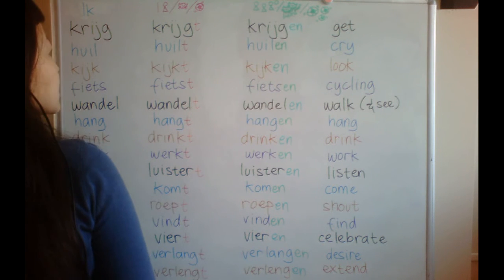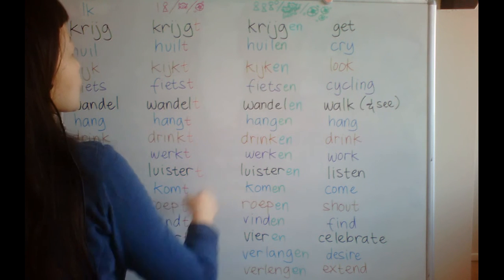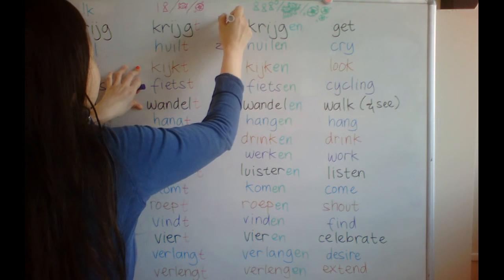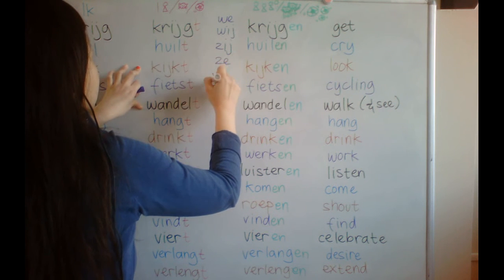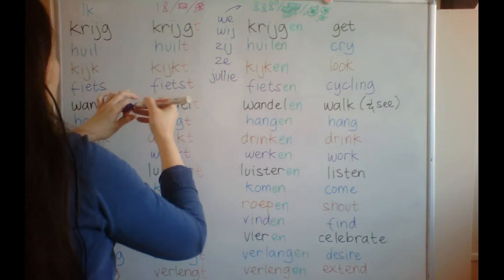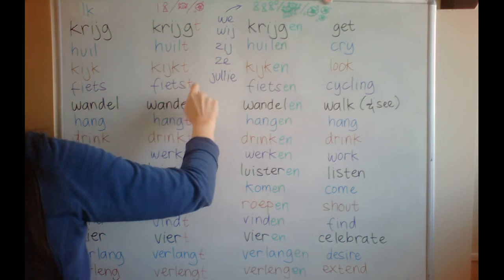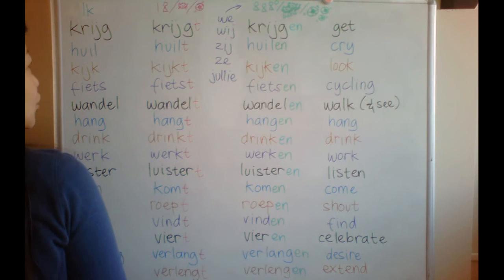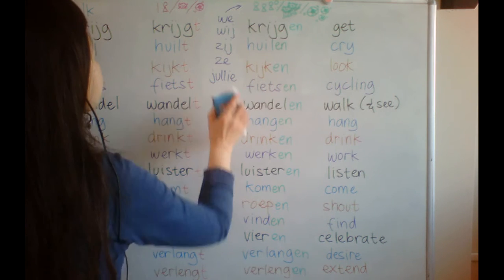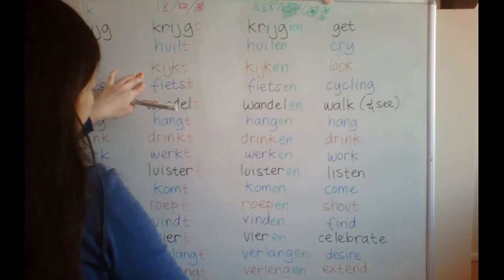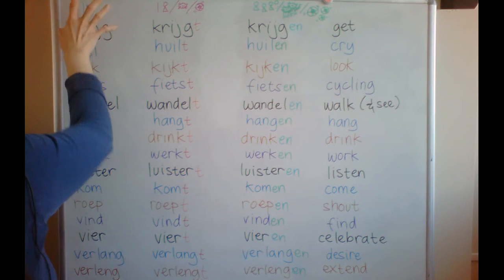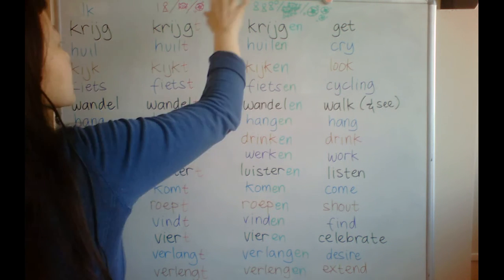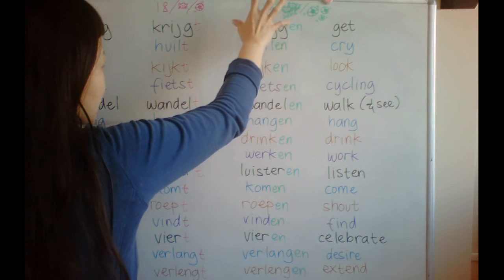And this column here is for the subject that consists of more than one: 'wij' or 'we' is we, 'zij' or 'ze' is they, 'jullie' means you guys — all use this column. So: I use the base form, singular subjects use 't' at the end of the word, and plural subjects use 'en' or 'an' at the end of the word.